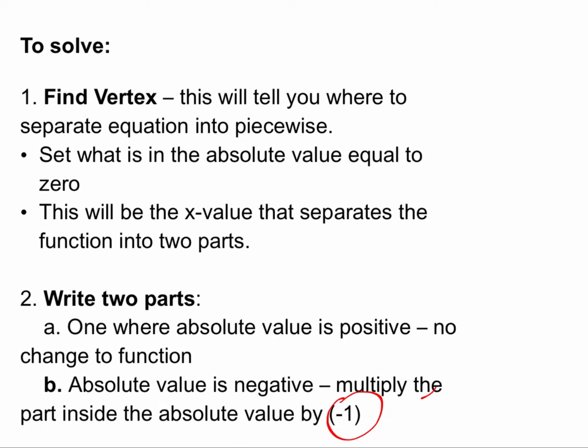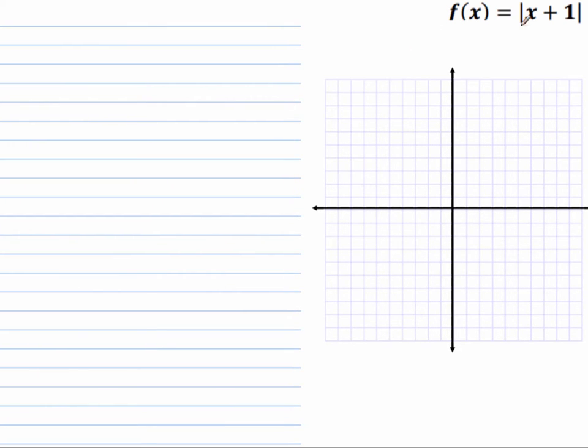Let me step through one. Suppose I have f(x) = |x + 1|. You need to find out where what is inside equals zero. So x + 1 = 0 when x = -1. When x equals negative one, you're going to have a change in your function from negative to positive.